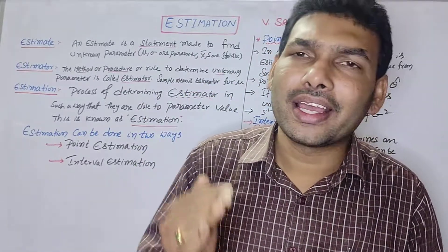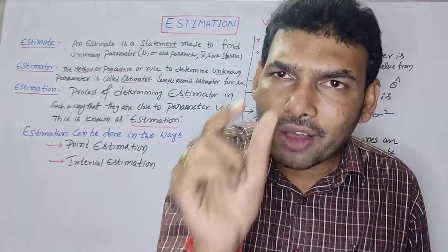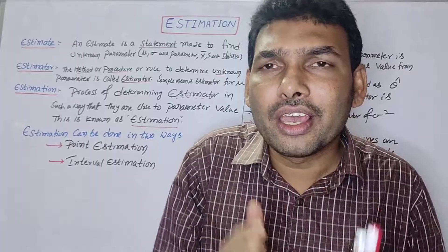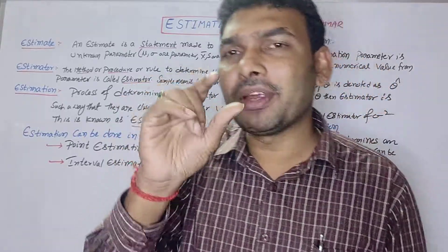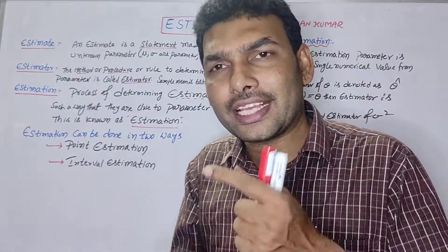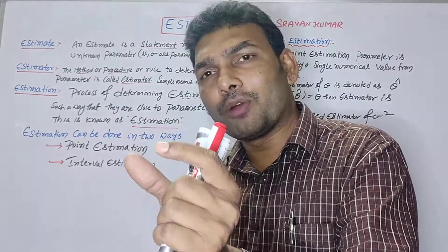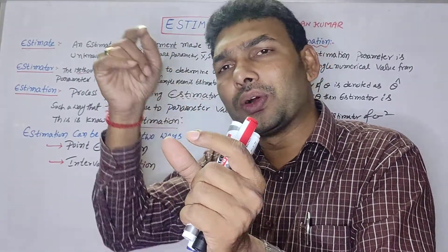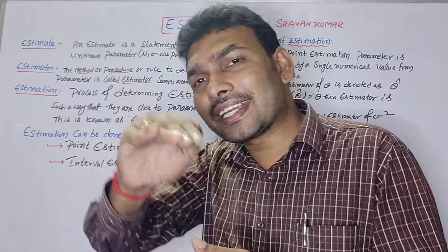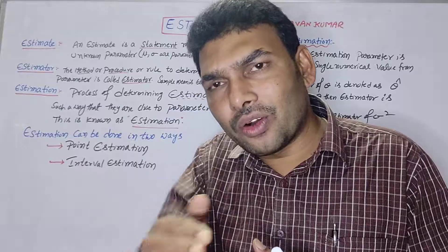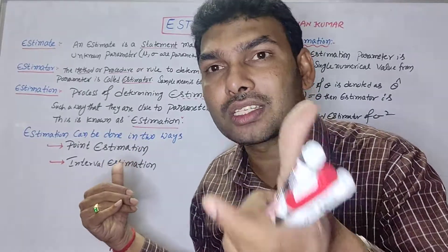Point estimation is estimating an unknown parameter value using a single numerical value. A good estimator is one where the expected value of the statistic is equal to the parameter — for example, guessing exactly 50 marks. That is a good estimator, also called an unbiased estimator.